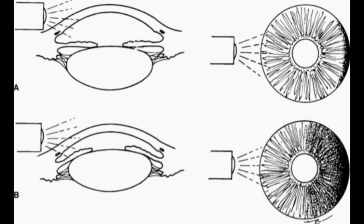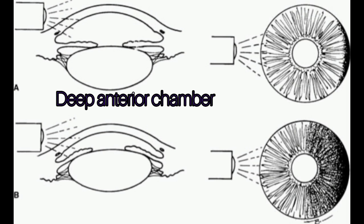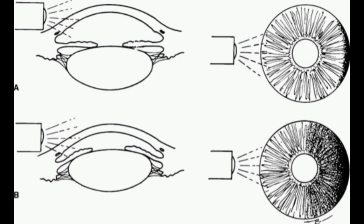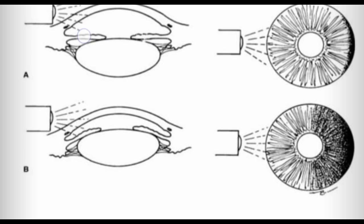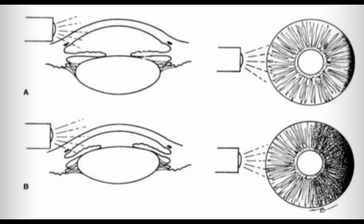The position of the pen torch should lie in the same plane of the eye. In the case of a deep anterior chamber, the iris lies flat and the whole iris will be illuminated. Look at diagram A. Due to the deep anterior chamber, the light travels to these areas and the iris gets illuminated.